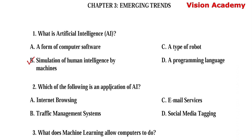Question number 2. Which of the following is an application of AI? Option A: Internet browsing. Option B: Traffic management systems. Option C: Email services. Option D: Social media tagging. Here, option D, social media tagging, is the right answer.